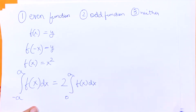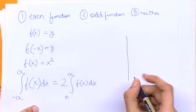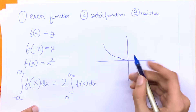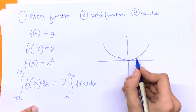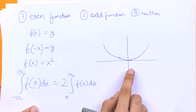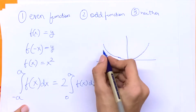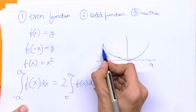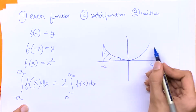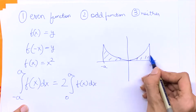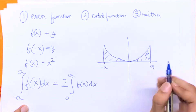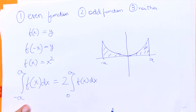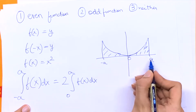Let me draw the example of x². This is a graph of x², and let's say this is minus a and this is a. The area under the left part is the same as the area under the right part. So when we take the integral from minus a to a, we can write it as two times the integral from 0 to a.